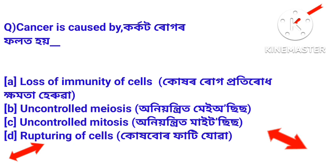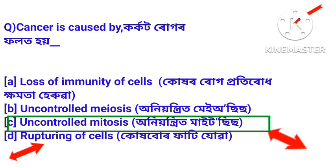Cancer is caused by — corcoror ruga folot hoye. The answer is uncontrolled mitosis. Cancer back or cut rubor folot hoye — uncontrolled mitosis, onion tetra bhabe bithi hoi.